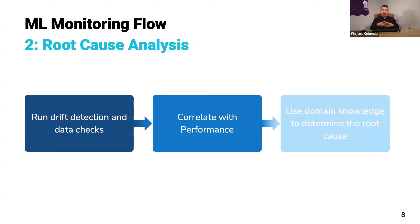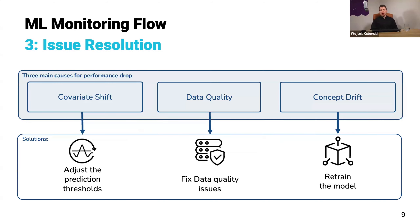In terms of root cause analysis, it's like a mini flow where we start with drift detection and data quality checks — both covariate shift detection and concept drift detection. We use those drift signals and data quality signals to correlate with performance, figure out automatically when these co-occur, and then use domain knowledge to identify the most likely root cause. There are basically three main causes for performance drop: the first is covariate shift, where our model input distribution changes significantly, which might lead to degradation in model performance.